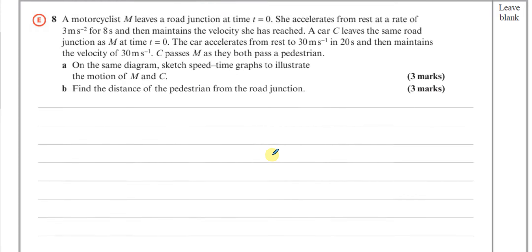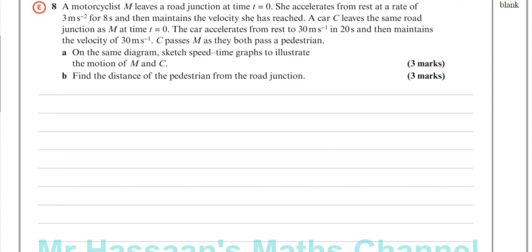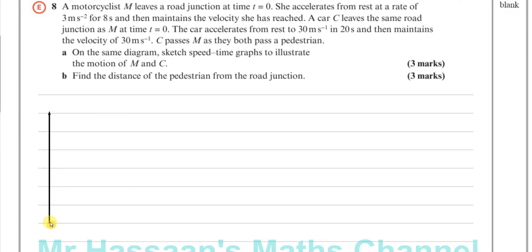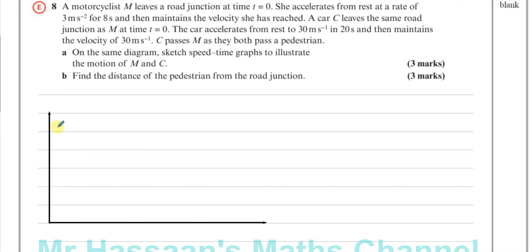So first let's sketch the speed-time graph. We have speed on the vertical axis, measured in meters per second, and time on the horizontal axis, measured in seconds.